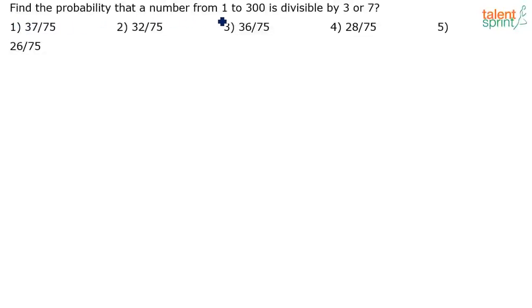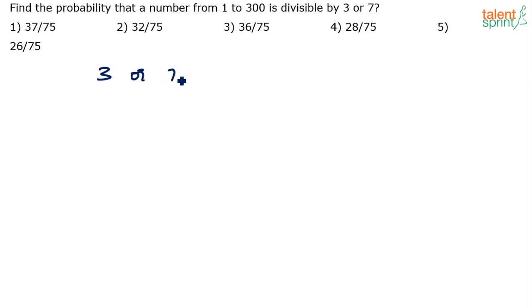Find the probability that a number from 1 to 300 is divisible by 3 or 7.